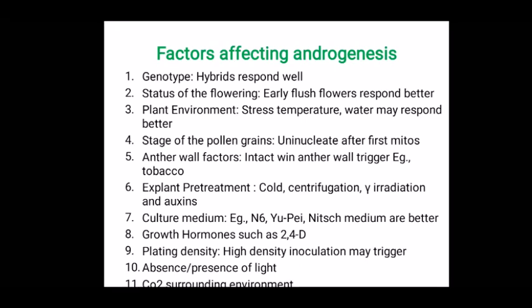Fifth, anther wall factors: in some cases, for example Nicotiana, the presence of the anther improves the possibility of the androgenesis process. Sixth, explant pretreatment: pre-treatment of explants by exposing to cold for certain days, centrifugation, gamma irradiation, or treating with auxins may enhance androgenesis. Seventh, culture medium: some specific culture mediums are reported to perform well for anther culture. Eighth, growth hormones: hormones play a major role — most commonly 2,4-D is added to the medium and may improve androgenesis performance. Ninth, plating density: high density plating may enhance androgenesis.